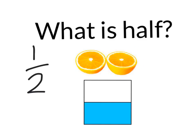Here is a picture of a square. This square has been divided in half. One half is coloured in and the other half is white. The important thing is that each half is the same size.